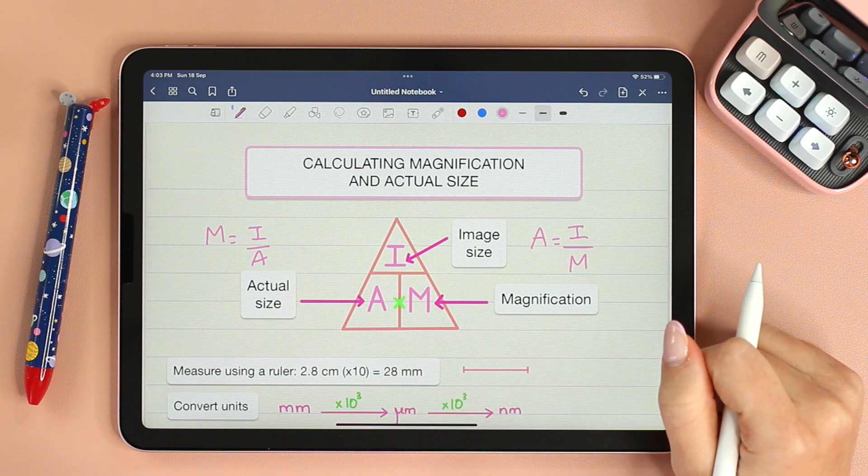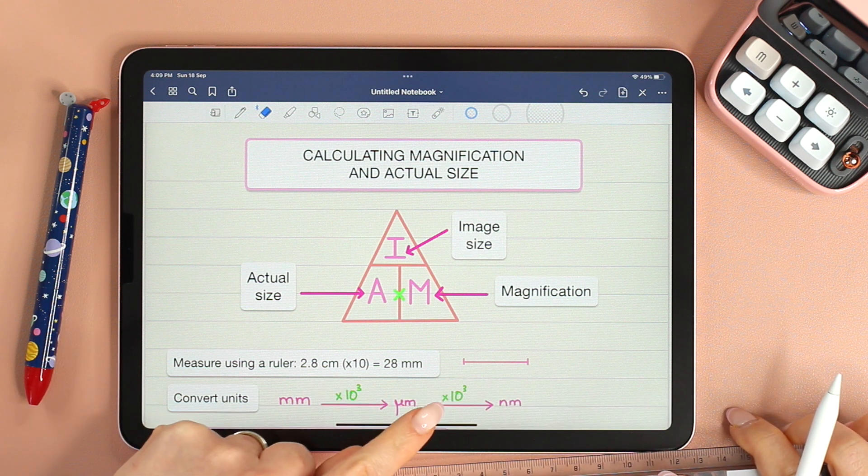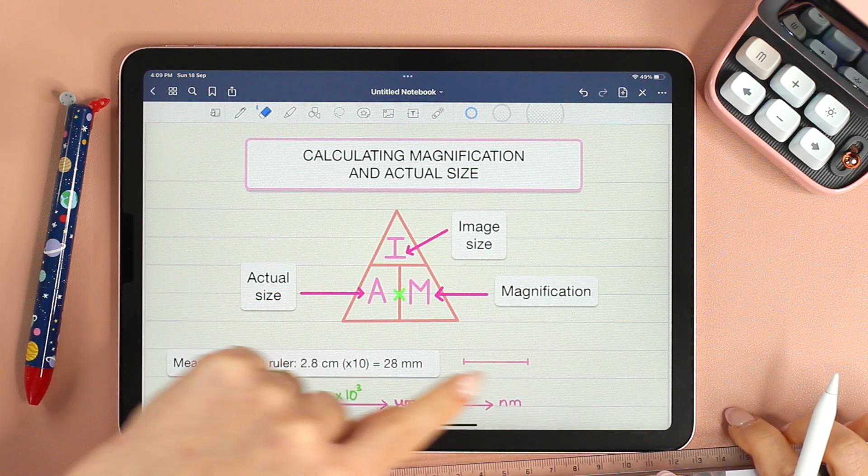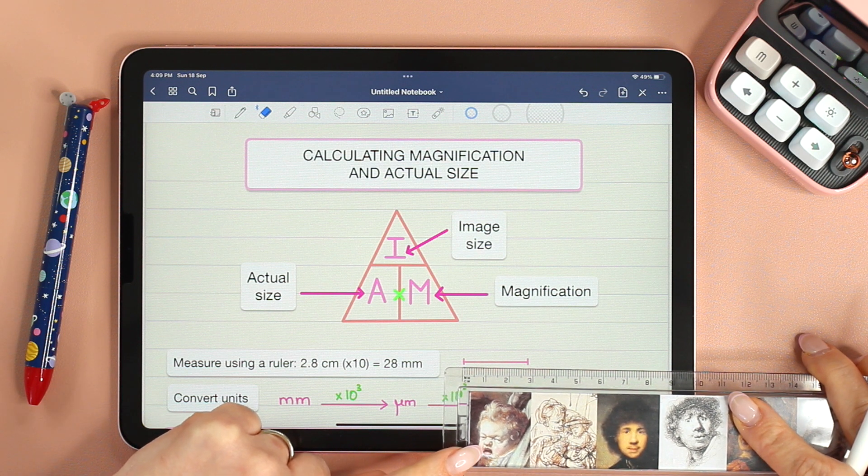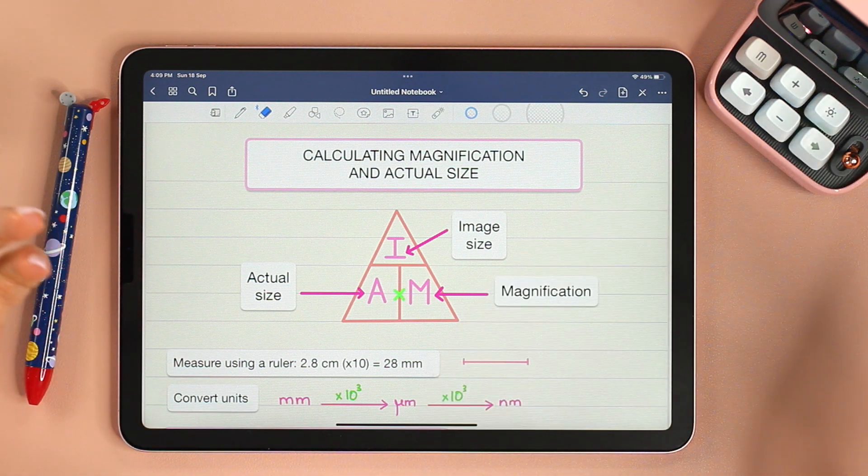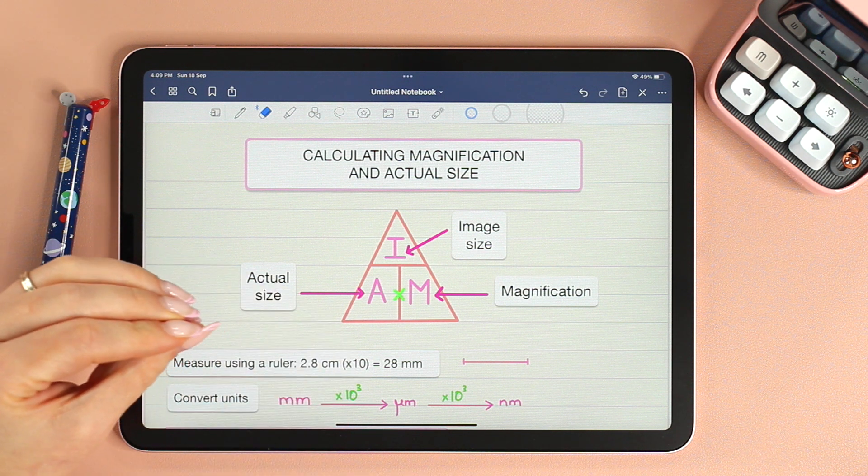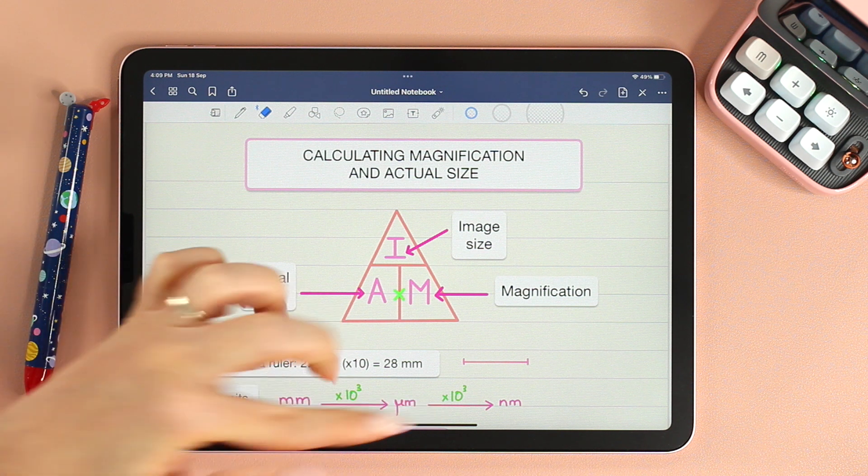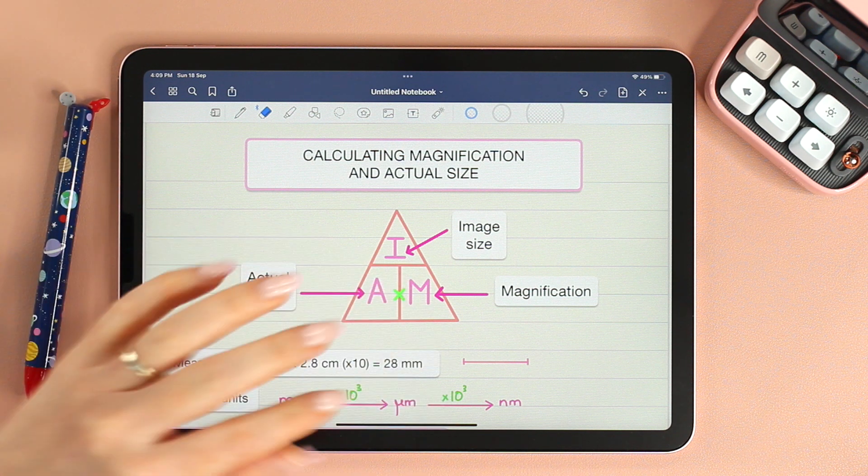When you're measuring image size, convert centimeter to millimeter. For example, this scale bar is 2.8 centimeters. Multiplied by 10, that's 28 millimeters. Now if you're very confident with unit conversions and you know how to tackle converting centimeter to micrometer, then feel free to do so. But for those who struggle with units,